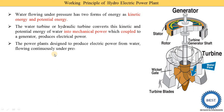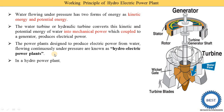The power plant designed to produce electric power from water flowing continuously under pressure is known as the hydroelectric power plant. A hydroelectric power plant is a power plant designed to produce electric power by using water.